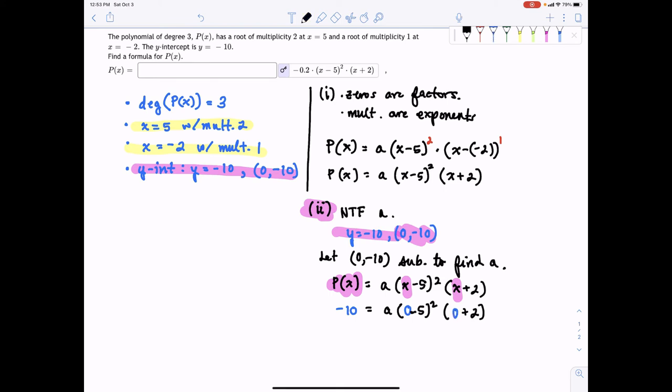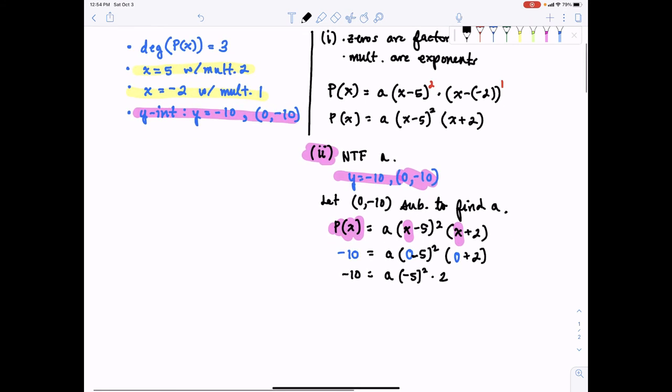All right, just simplifying this out, we get negative 10 equals negative 5 squared times 2, and we can easily simplify this by having negative 10 equal to 25 times 2, which is 50a.